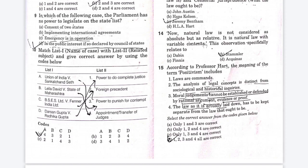The next question: the natural law is not considered as absolute, but as relative — it is a natural law with variable content. This observation is specifically related to which jurist? Option A: Davin. Option B: Stammler. Option C: Finance. Option D: Aquinas. The right answer is Option B — Stammler.